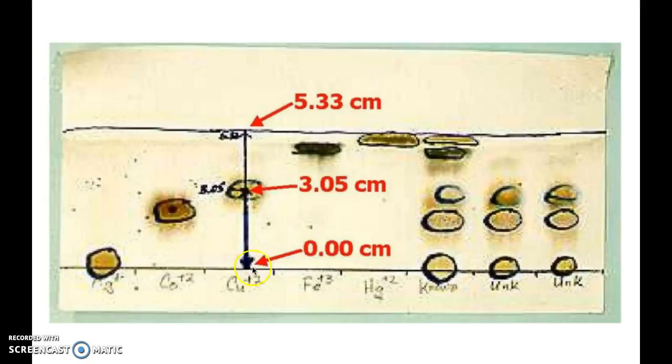Here's a quick example of one of the spots. For example, let's say I measure from the beginning to the center of that spot is 3.05 centimeters. There will be rulers provided for you in the lab. And then I measure from the beginning to the solvent line is 5.33 centimeters. I can divide this number by that number, and that should give me my RF value.